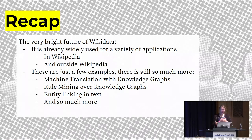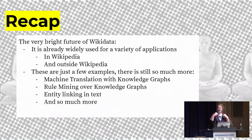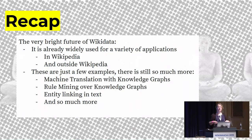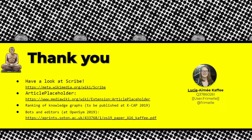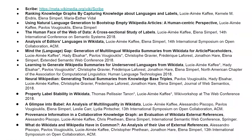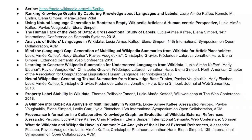To make a quick recap: Wikidata is already widely used for numerous applications in Wikipedia and outside Wikipedia for research. What I talked about is just the things I do research on, but there is still so much more — machine translation using knowledge graphs, rule mining over knowledge graphs, entity linking in text. Wikidata is getting more and more popular. I think we are at a very good stage to push and connect the communities to get the best from both sides. Thank you very much — my slides are in the comments already, and all papers are open access.